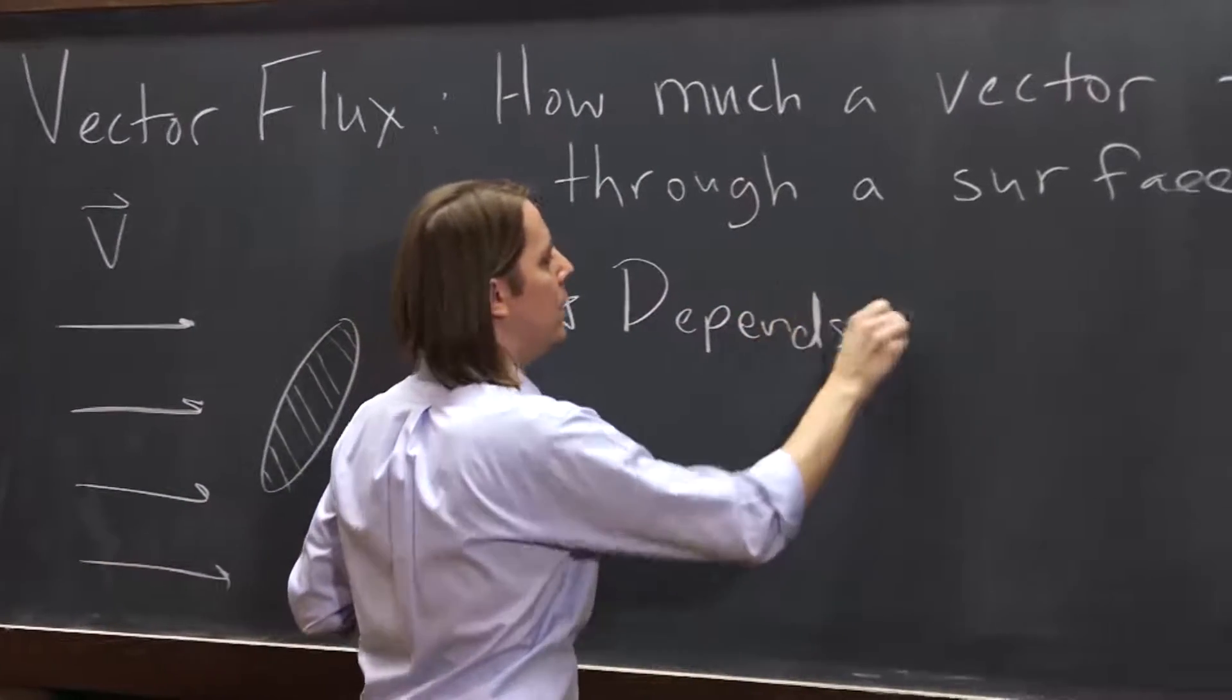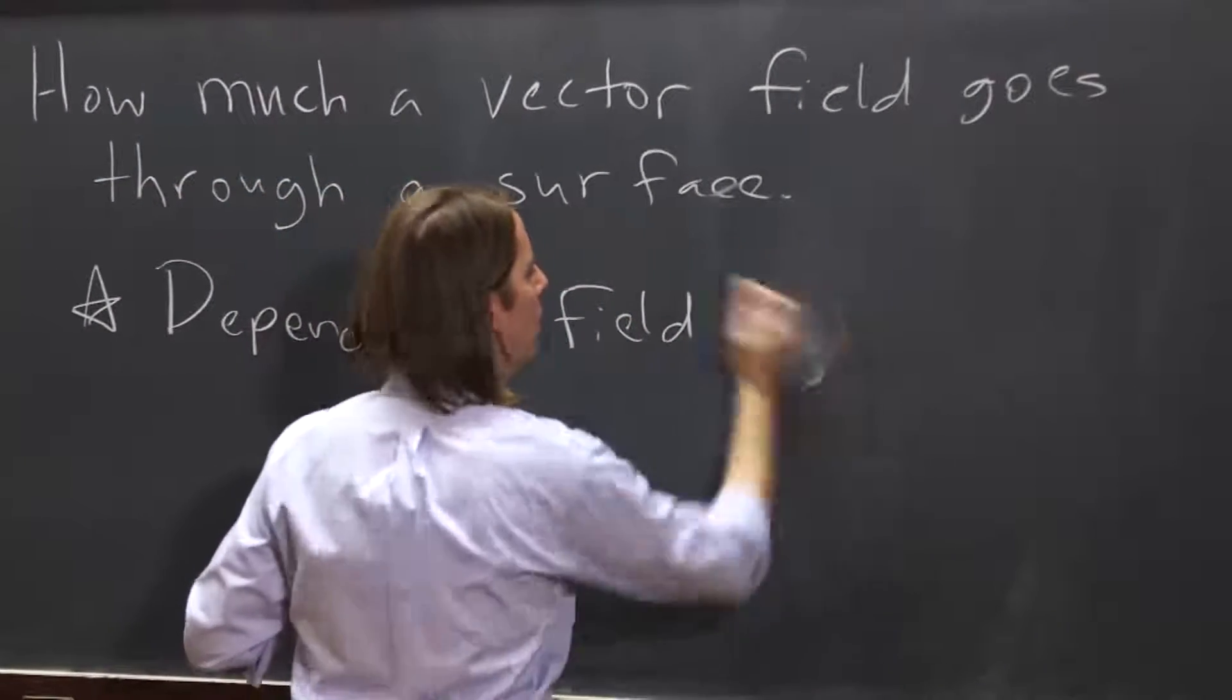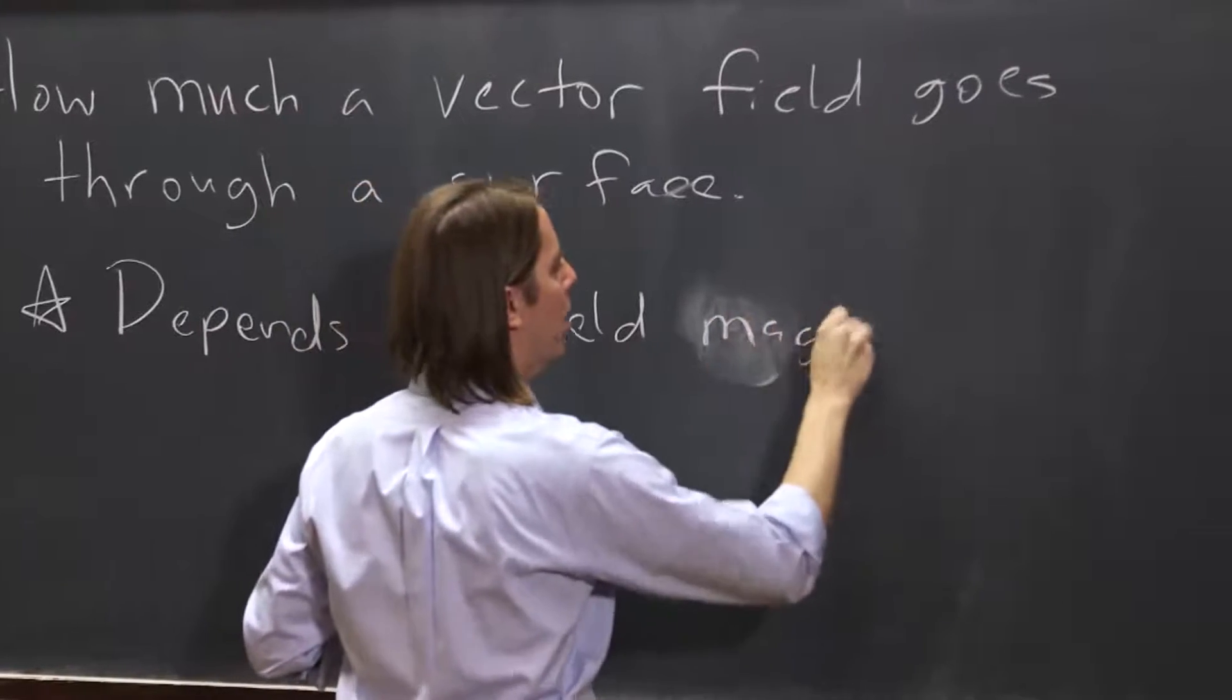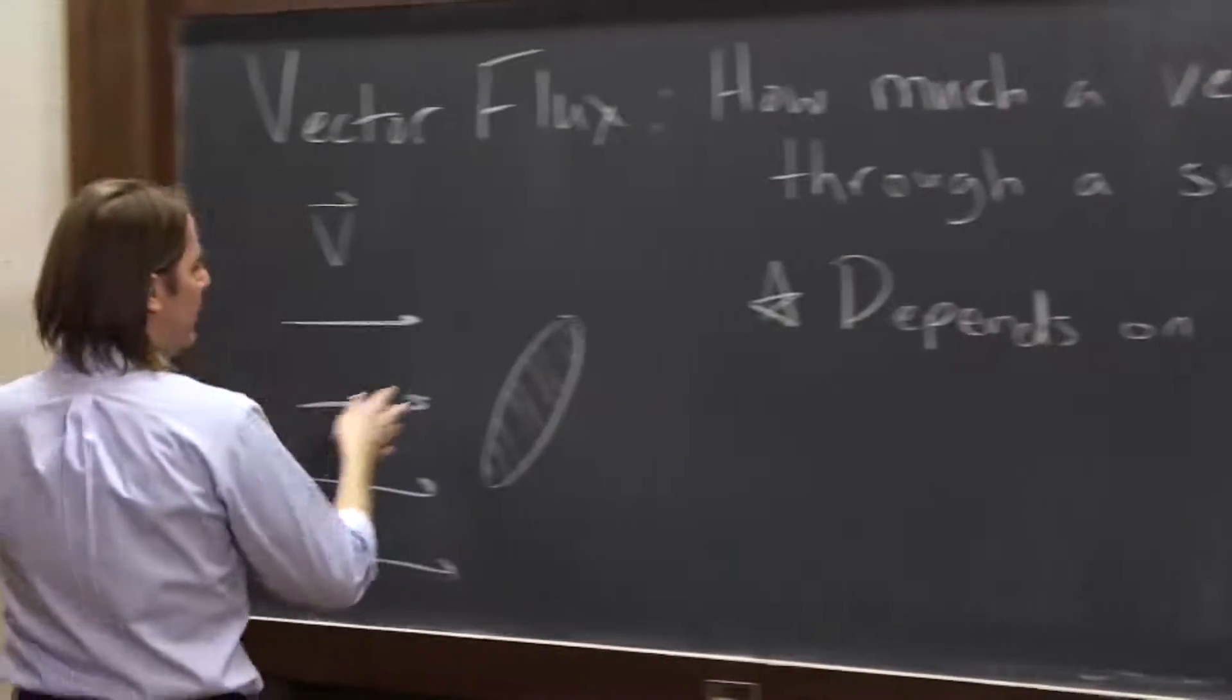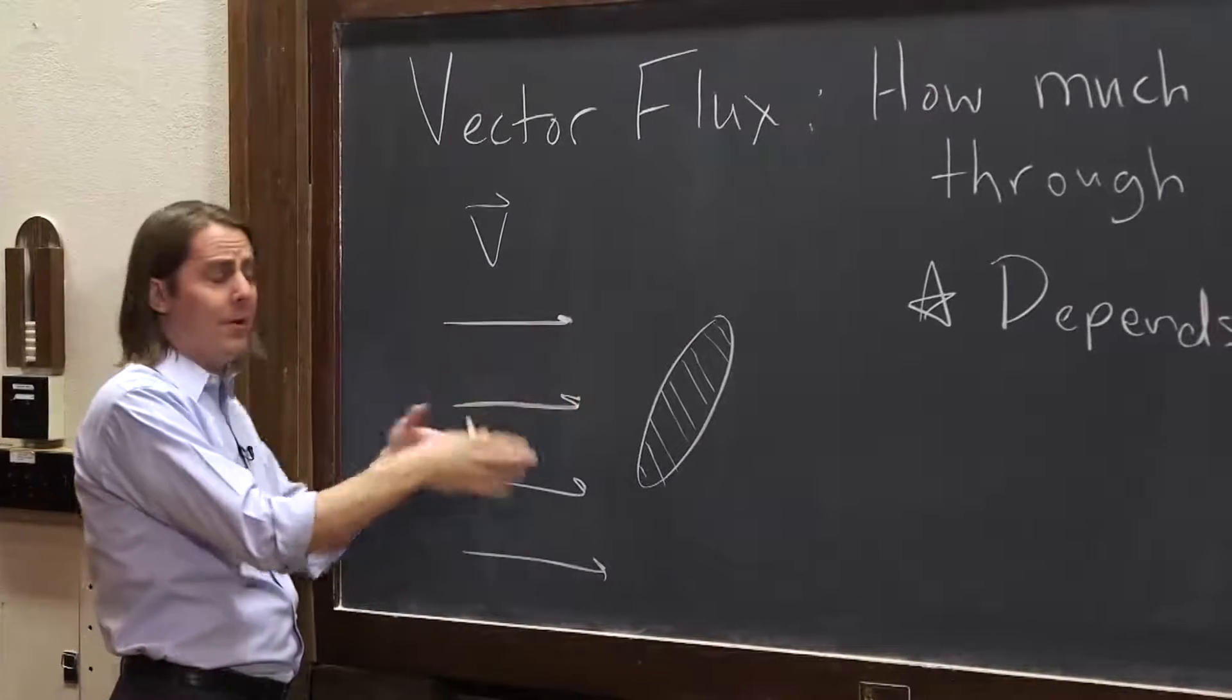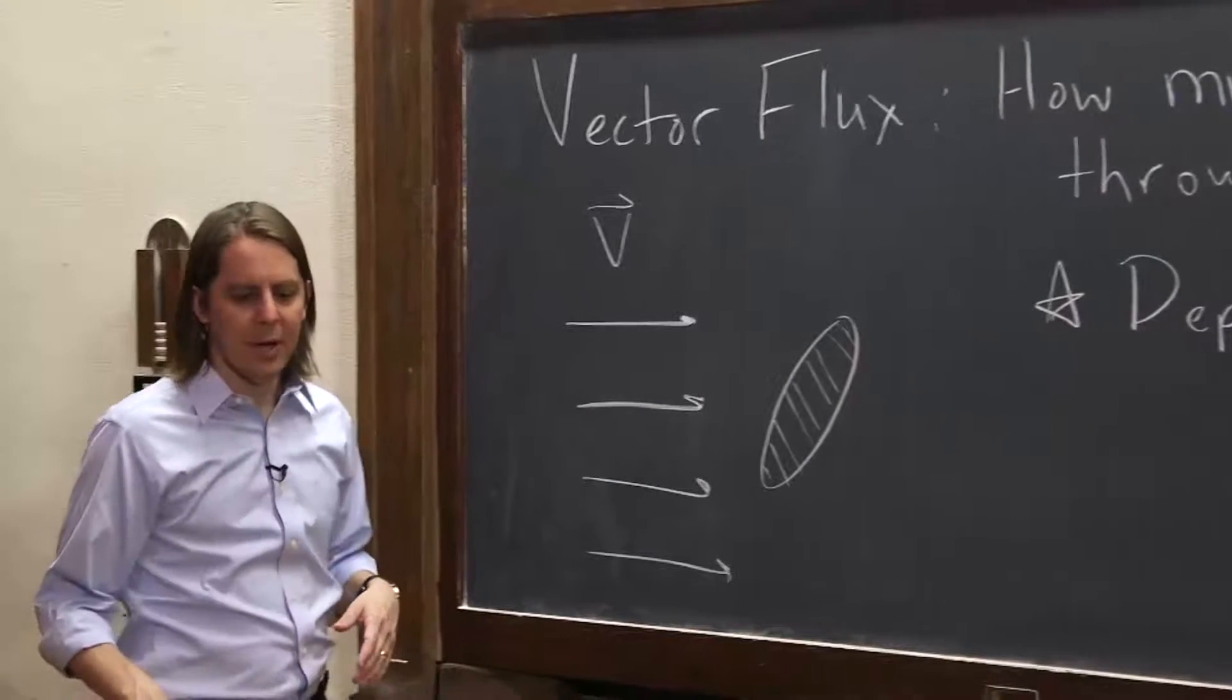It depends on the field magnitude, okay? So if it's a really weak field that I draw here, then of course it's a smaller flux. If it's a really large field, it's a bigger flux. So you would expect that it depends on the field magnitude.